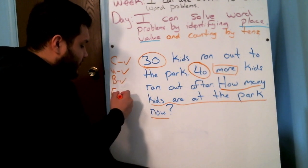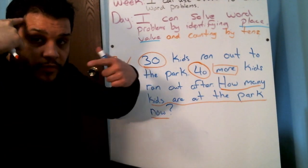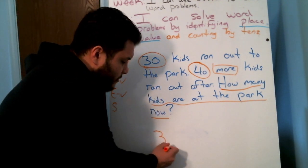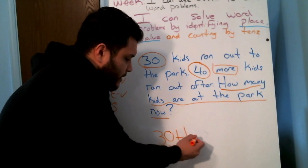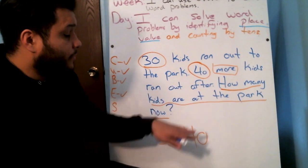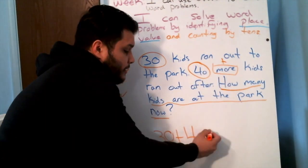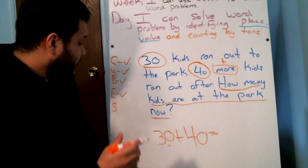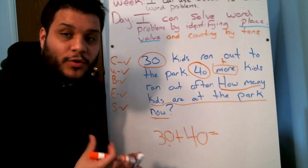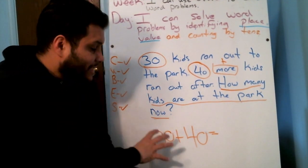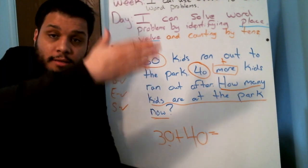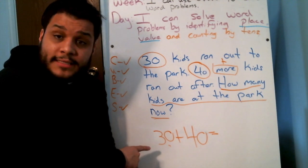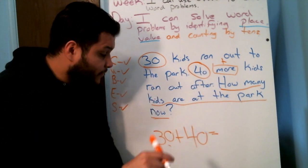Then we want to do our E, which is evaluate. This is when our brain starts moving and thinking. So what two numbers do I have? I have 30 and I have 40. The word 'more' lets me know that I'm going to add to find out how many kids are in the park now. I know that this week we've been focusing on writing our addition problems vertically. But is this written vertically? It's not — it's written horizontally, from left to right.